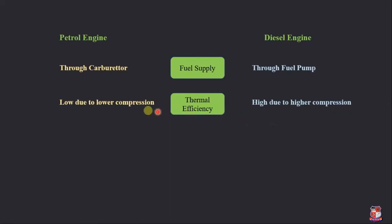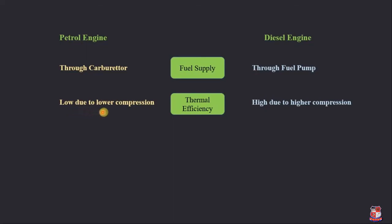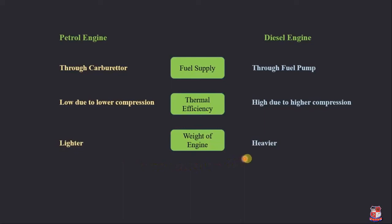Why thermal efficiency differs will be covered in the heat engine chapter where we derive the efficiency equations. The efficiency of a petrol engine is 1 minus 1 over R raised to gamma minus 1, and because compression ratio R appears in the equation, the higher the compression ratio, the higher the efficiency — which is why diesel engines have higher thermal efficiency than petrol engines. Regarding weight: petrol engines are generally lighter while diesel engines are heavier, because diesel engines must sustain higher pressures and therefore use heavier parts.